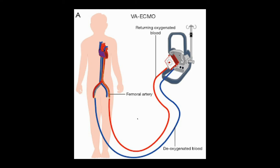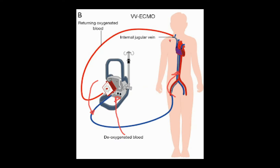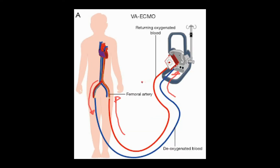For veno-arterial ECMO or VA ECMO, this is a femoral-femoral cannulation setup. The patient has a cannula sitting in their right femoral vein extracting deoxygenated blood, which goes into the pump-oxygenator-membrane setup. After gas exchange occurs, it's pumped back into the patient's left femoral artery, providing oxygenated blood to the arterial circuit. VV ECMO is really for patients who have lung failure — their lungs are not able to oxygenate blood effectively. VA ECMO is for patients with heart problems, or heart and lung problems, where they can't effectively pump or oxygenate blood.